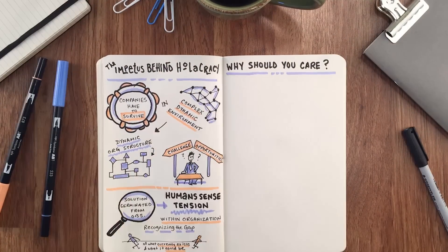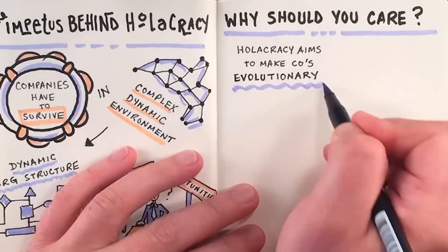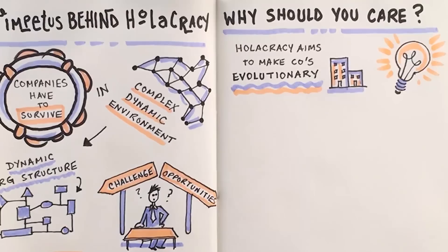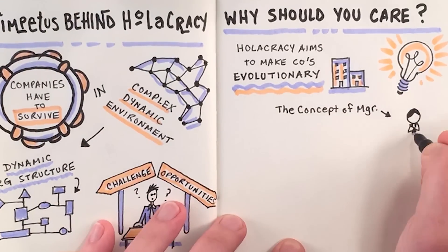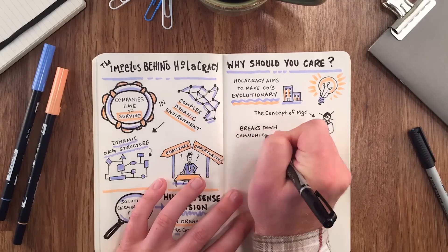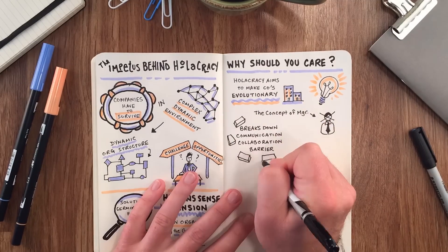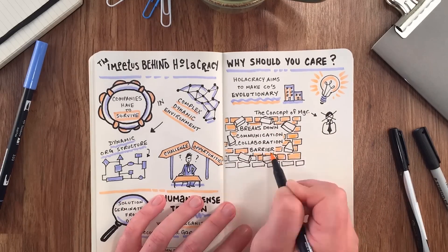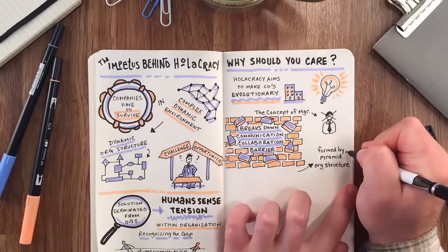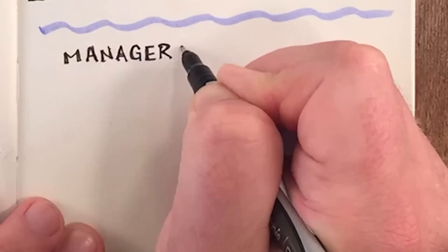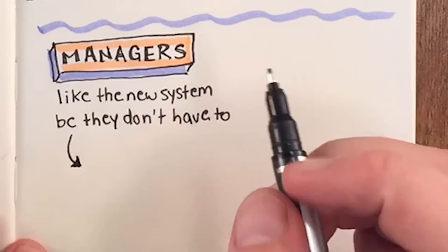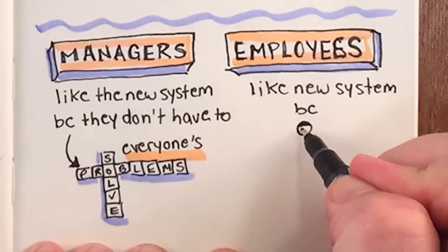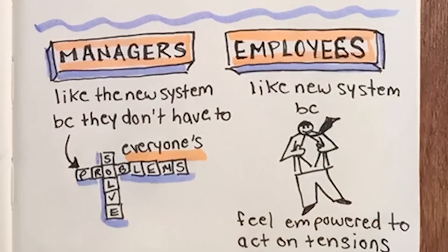Why should you care? Holacracy is a system that aims to make companies evolutionary by capitalizing on this unique ability that we have. By doing away with the concept of manager, it effectively breaks down communication and collaboration barriers formed by traditional siloed pyramid org structures. Managers like the new system because they don't have to spend their entire day solving everyone's problems. And employees like it because they feel truly empowered to act on tensions, problems, and opportunities that they recognize.